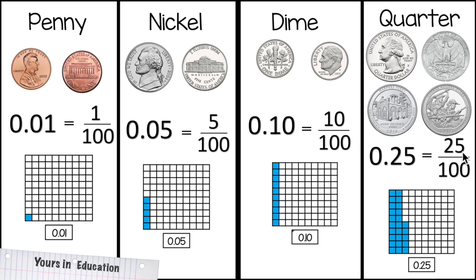In fraction is 25 out of 100. And then in decimal model, we have 10, 20, 25 shaded out of 100.